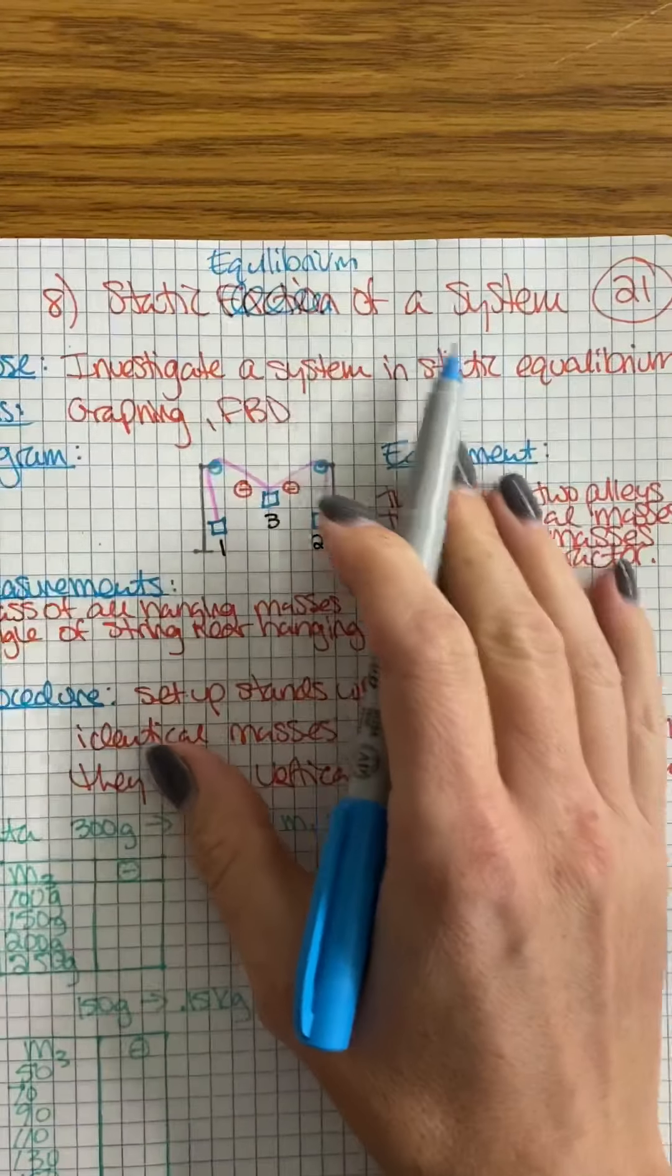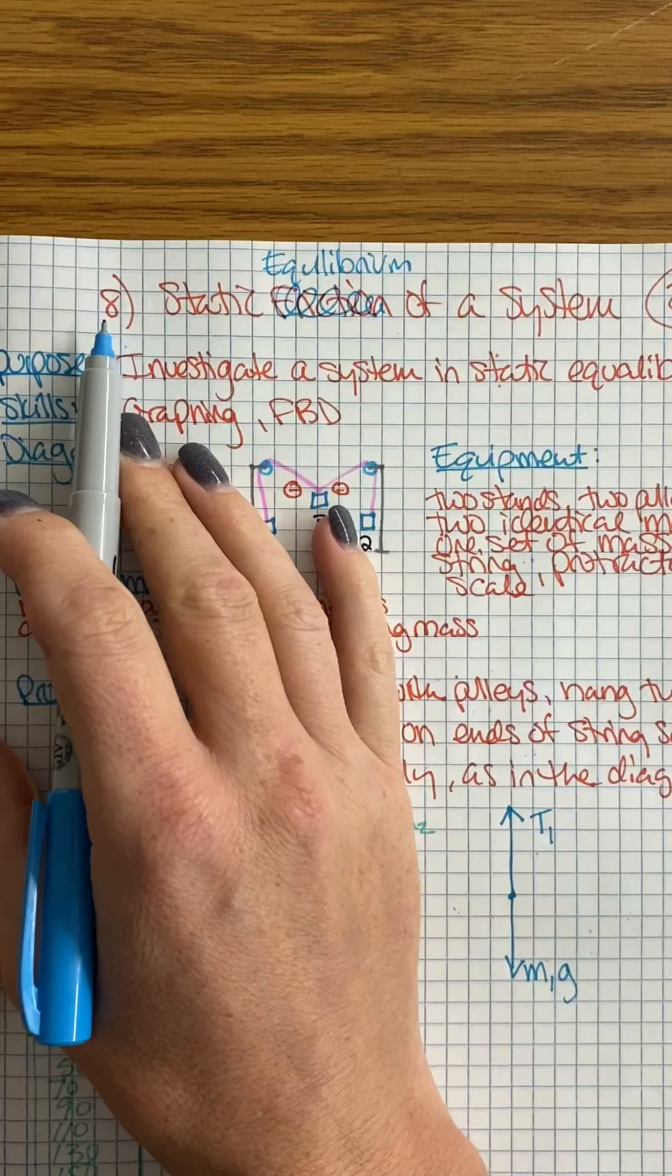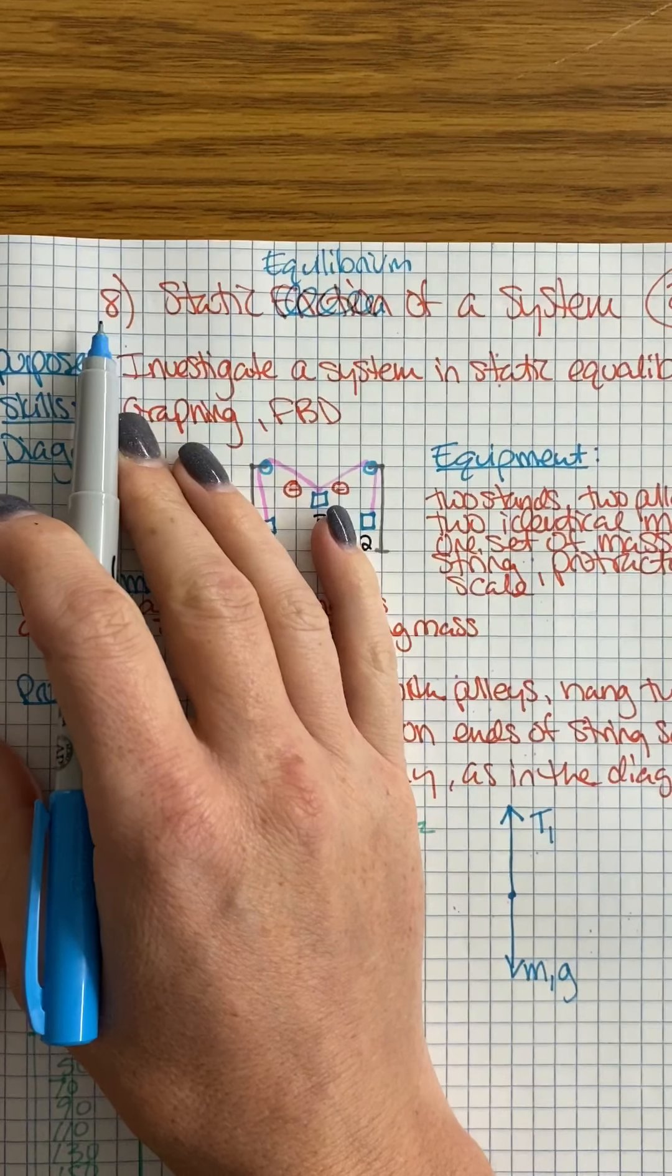All right, this is a static equilibrium of a system lab. It's number eight. I misspoke in the video yesterday—I called it number nine.